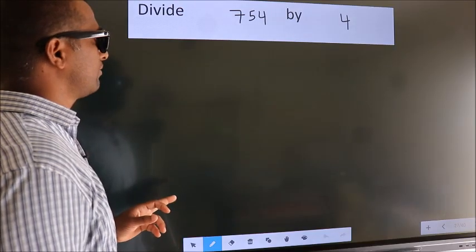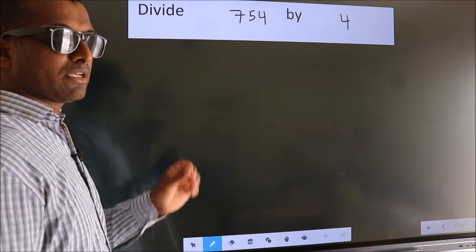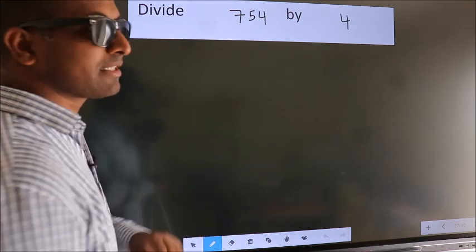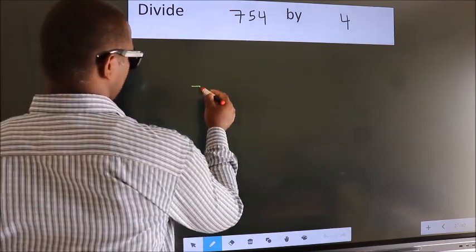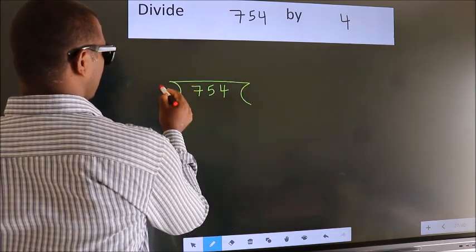Divide 754 by 4. To do this division, we should frame it in this way: 754 here, 4 here.